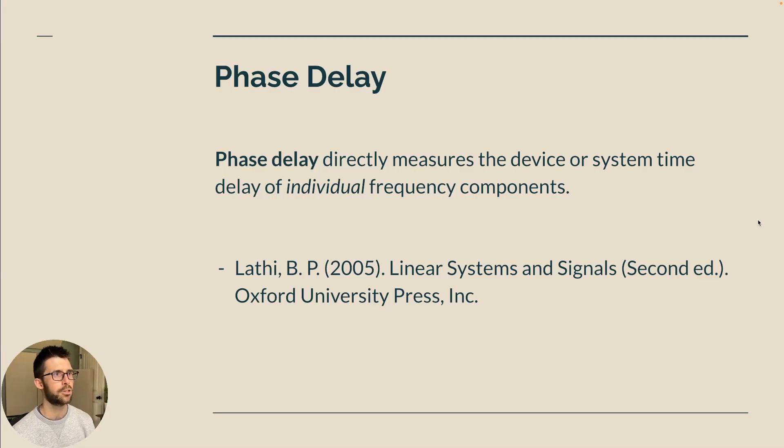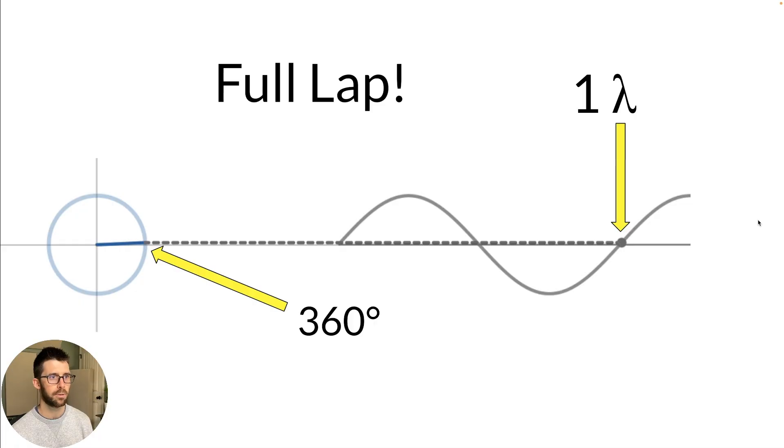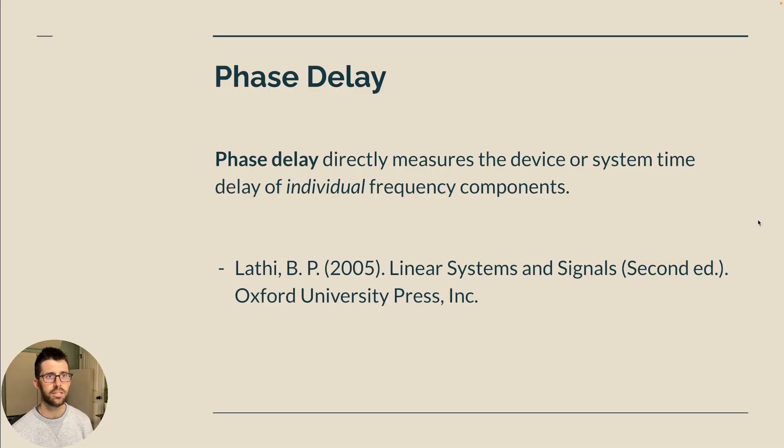So a great definition here is phase delay directly measures the device or system time delay of individual frequency components. That's why in my earlier example, this is a single sine wave going. So that's how phase delay can be calculated. It's not for the entire signal. It's just one single sinusoid or one single signal.